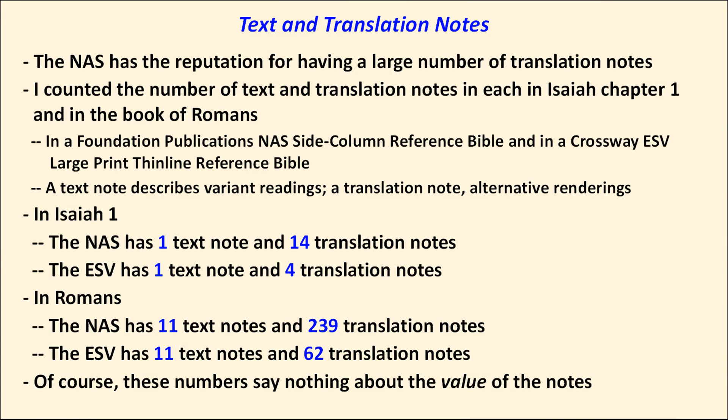If you're like me, you want to know about variant readings in the text, and you'd like to know if the passage you're reading can be translated differently. So I spot checked text and translation notes in the two translations also, looking at Isaiah chapter 1 and the entire book of Romans. In a nutshell, the ESV and the NAS print about the same number of text notes — notes that tell you about variant readings in the text. The NAS gives you many more translation notes. In my opinion, many of the NAS translation notes display literal readings that should have been in the text in the first place.